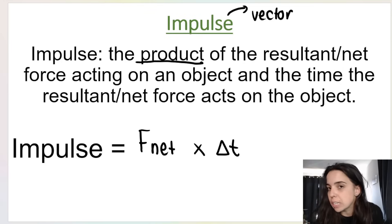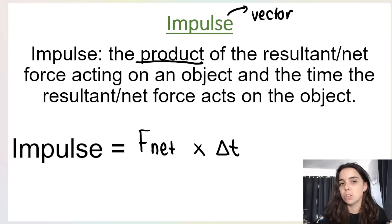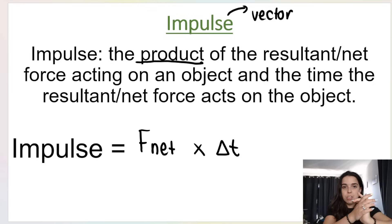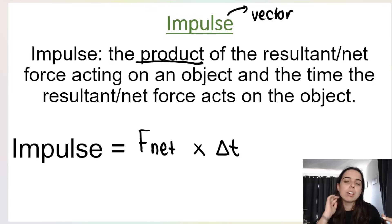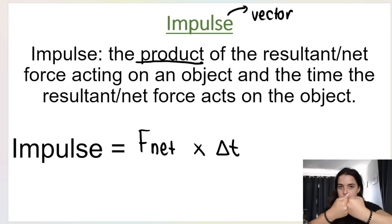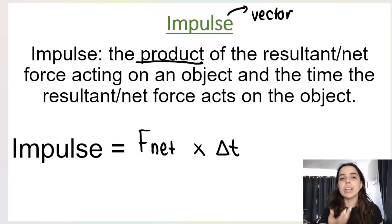Two things can increase impulse. One is F net — the larger the net force or resultant force, the larger the impulse. Another thing that can increase impulse is time. The longer the net force acts on the object, the greater the impulse. Think of two objects colliding: the longer the collision lasts and the greater the force of the collision, the greater the impulse.